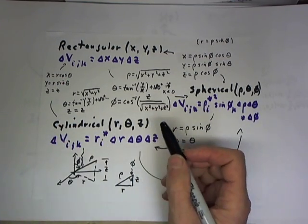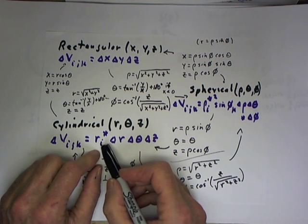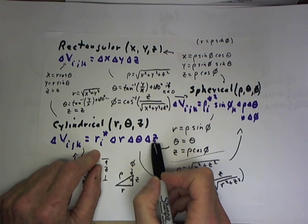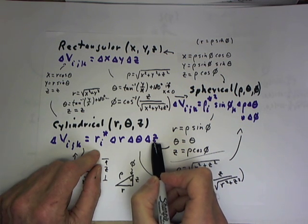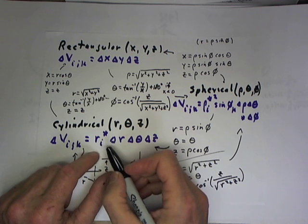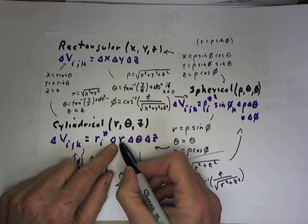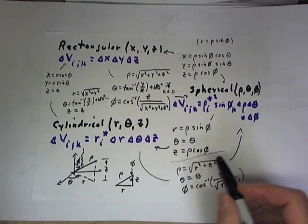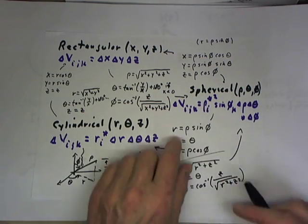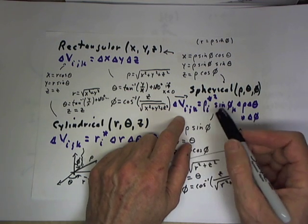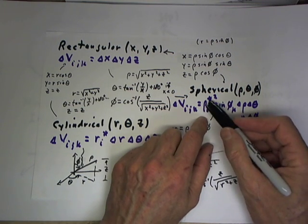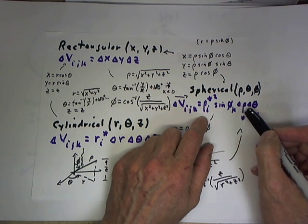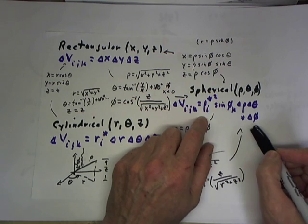In cylindrical coordinates r, theta, z, our typical volume increment is r sub i star times delta r times delta theta times delta z. This is easily understood in terms of the polar coordinate area increment, which has dimensions delta r by r sub i star delta theta. In spherical coordinates, our volume increment, as we've just seen, is rho sub i star squared times the sine of phi sub k times delta rho times delta theta times delta phi.